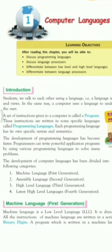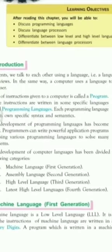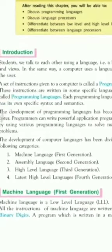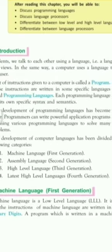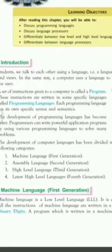The first one is machine language, which is the first generation. The second is assembly language, which is the second generation. The third is high level language, which is the third generation. The fourth is latest high level languages, which is the fourth generation.